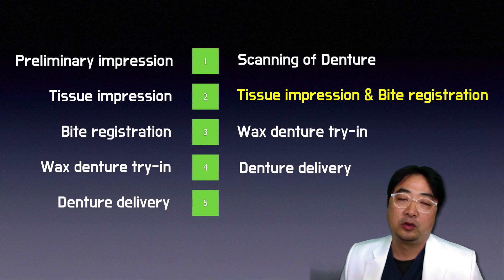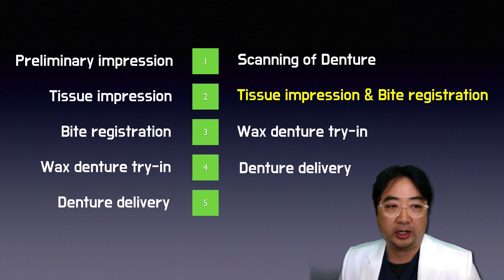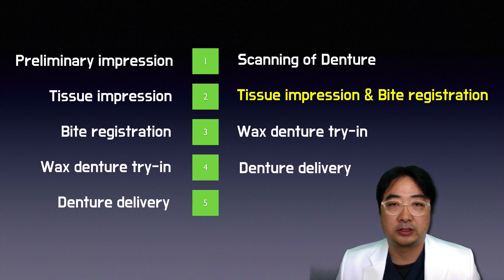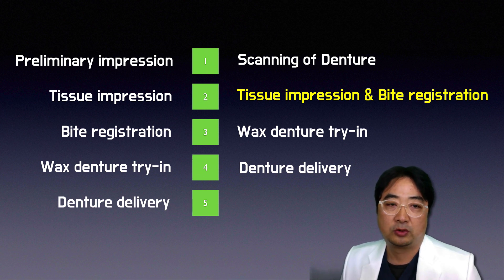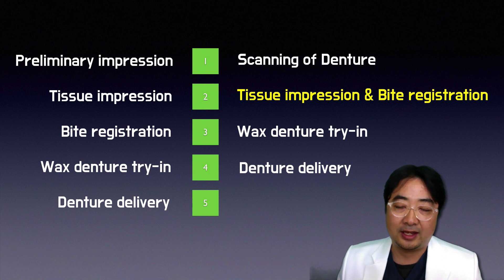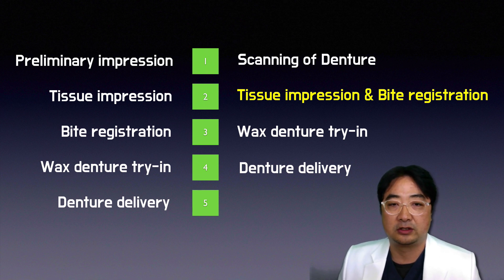In the conventional workflow, we start with the preliminary impression, then take a tissue impression with an individual tray. At the third visit, we take bite registration with a wax rim recording base. Then we do tooth try-in and wax denture try-in, which can take several visits, and then denture delivery. So at minimum we need five visits for the conventional workflow. But if you can duplicate the denture — when the existing denture's VDO is acceptable and the border is good enough — you can digitally duplicate the denture and reduce the patient visits. That's the advantage of scanning and printing a denture.